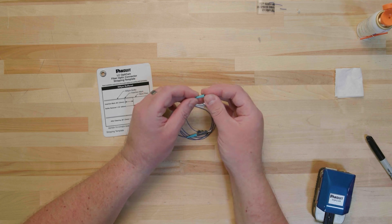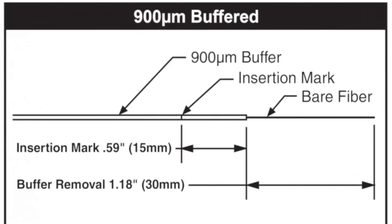Next, use the LC stripping template card that is provided with every OptiCam kit to mark the fiber. The first mark is the stripping mark, which will indicate how much of the buffer should be removed. Lay the fiber strand on the LC stripping template. Make a stripping mark on the buffer 1.18 inches or 30 millimeters from the end of the fiber strand. The second mark is the insertion mark, which will indicate how far the fiber should be inserted into the connector. Make an insertion mark on the buffer 0.59 inches or 15 millimeters to the left of the stripping mark.